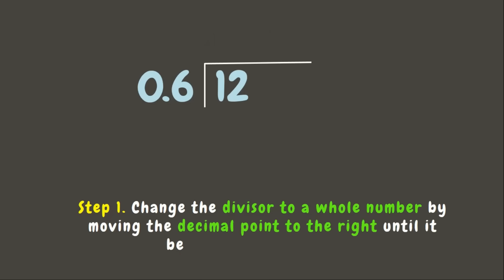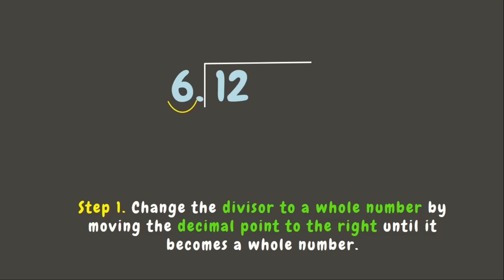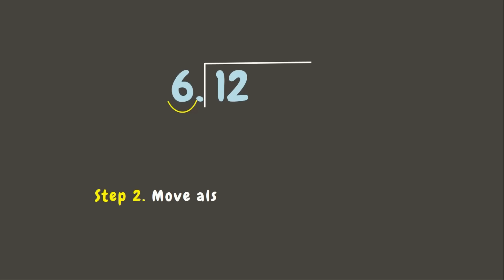Our first step is to change the divisor to a whole number by moving the decimal point to the right until it becomes a whole number. We need to remember the number of times we move the decimal point. Let's count: one. At this point, 0.6 becomes 6.